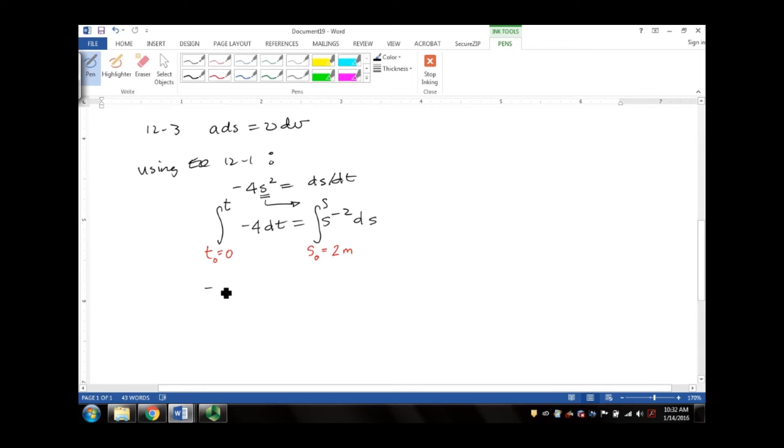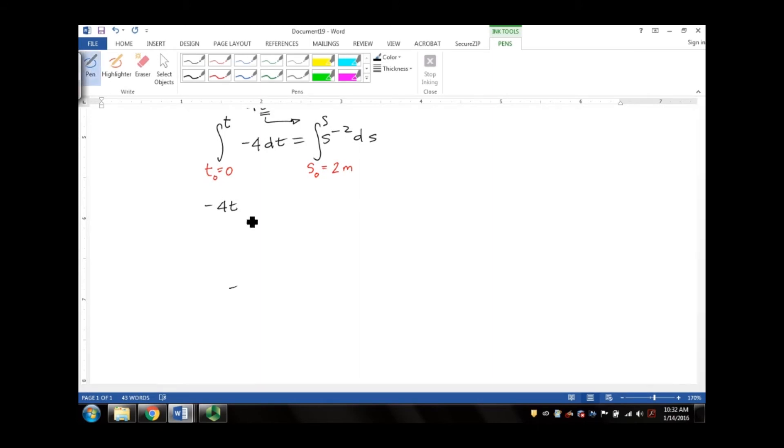Then we get that it's negative 4t evaluated from 0 to t is equal to s⁻¹, negative, that's the integral of s⁻². And we are going to now evaluate it from 2 meters, right?